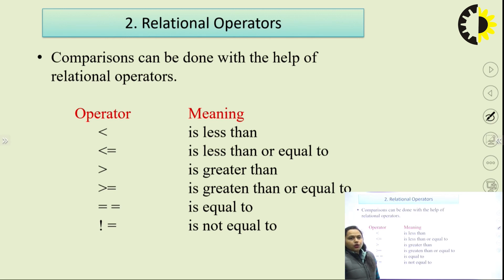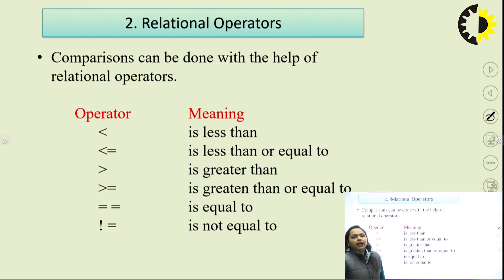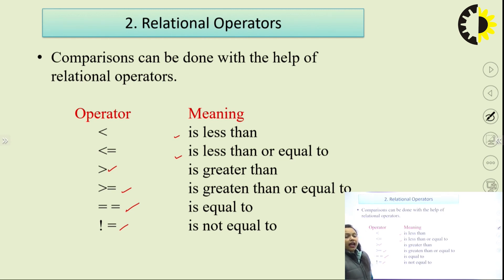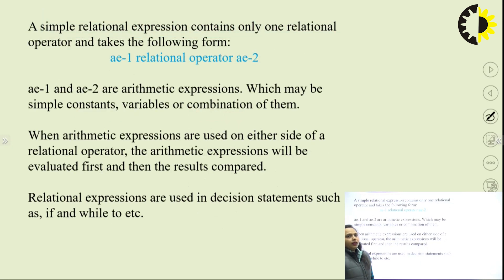Next we have relational operators. Relational operators are basically used to compare data. Whatever data we have, sometimes we want to compare each and every piece of data. With the help of relational operators we make comparisons between the data. The relational operators include: less than, less than or equal to, greater than, greater than or equal to, equal to, and not equal to. These are the relational operators in C through which we compare data.